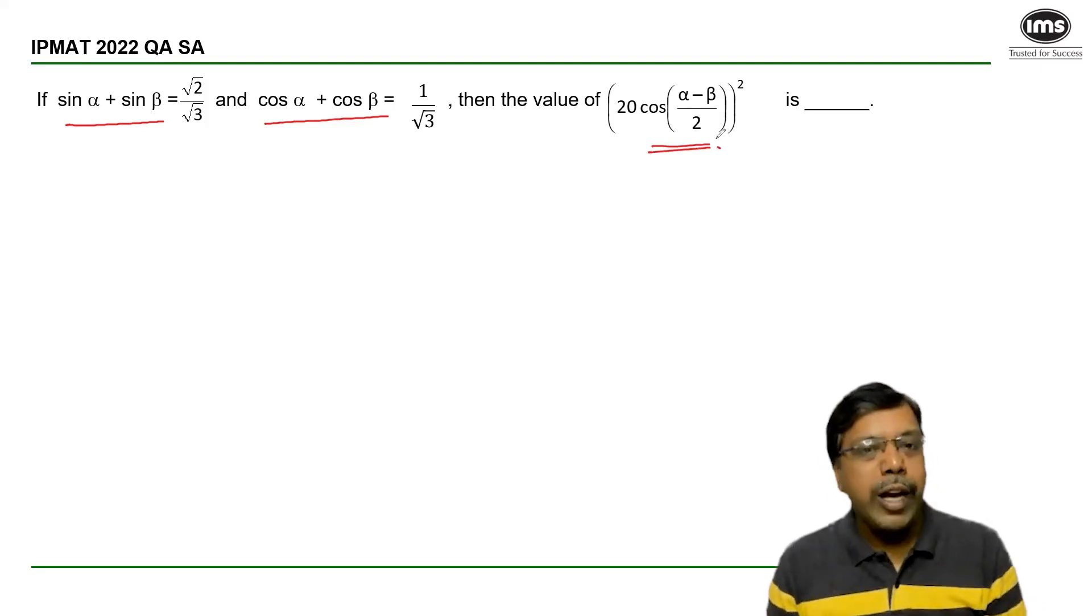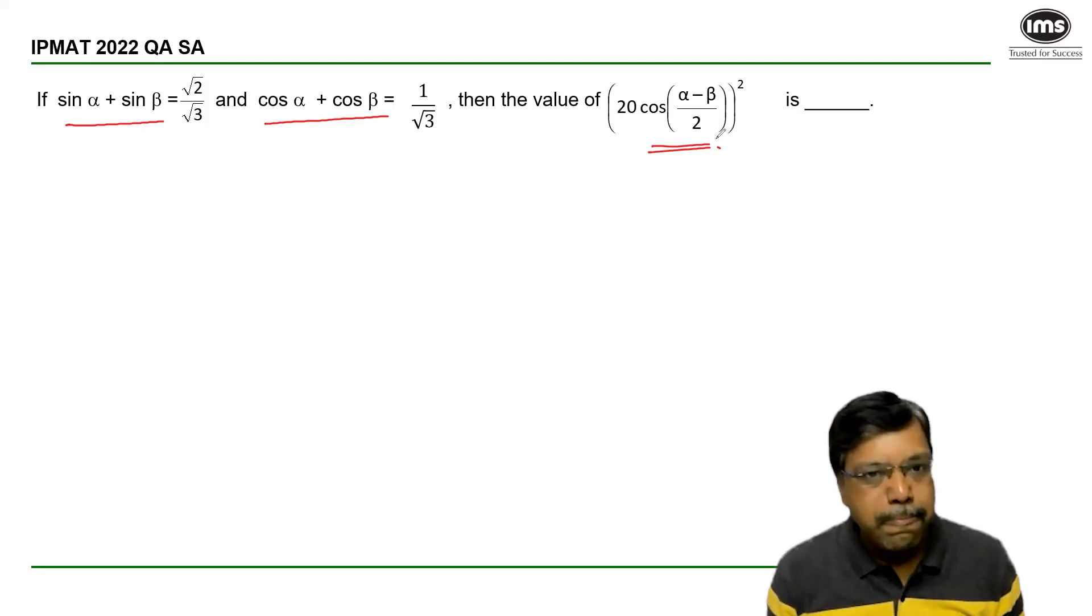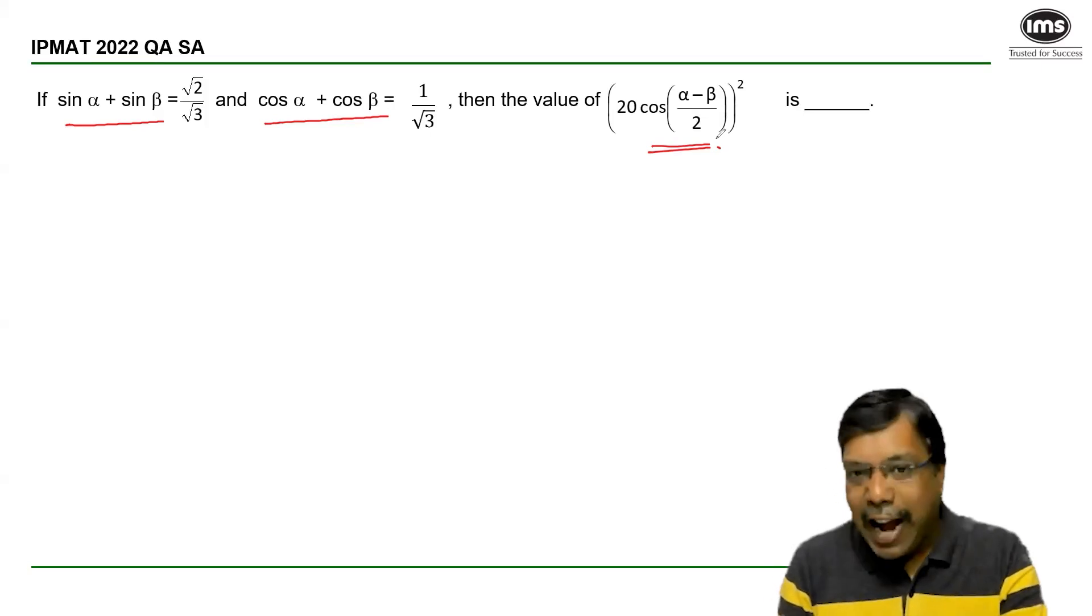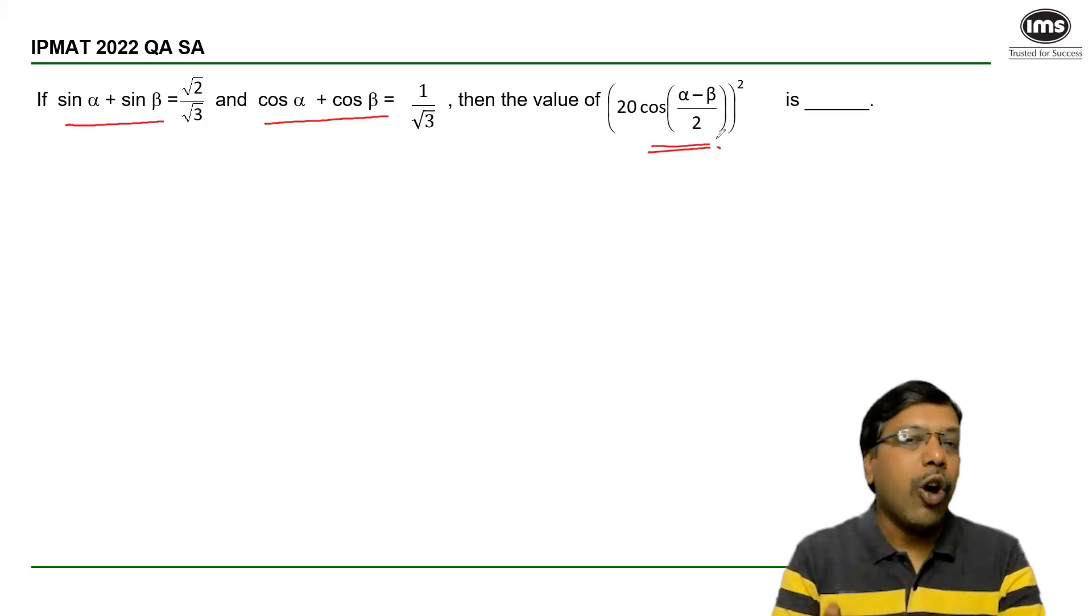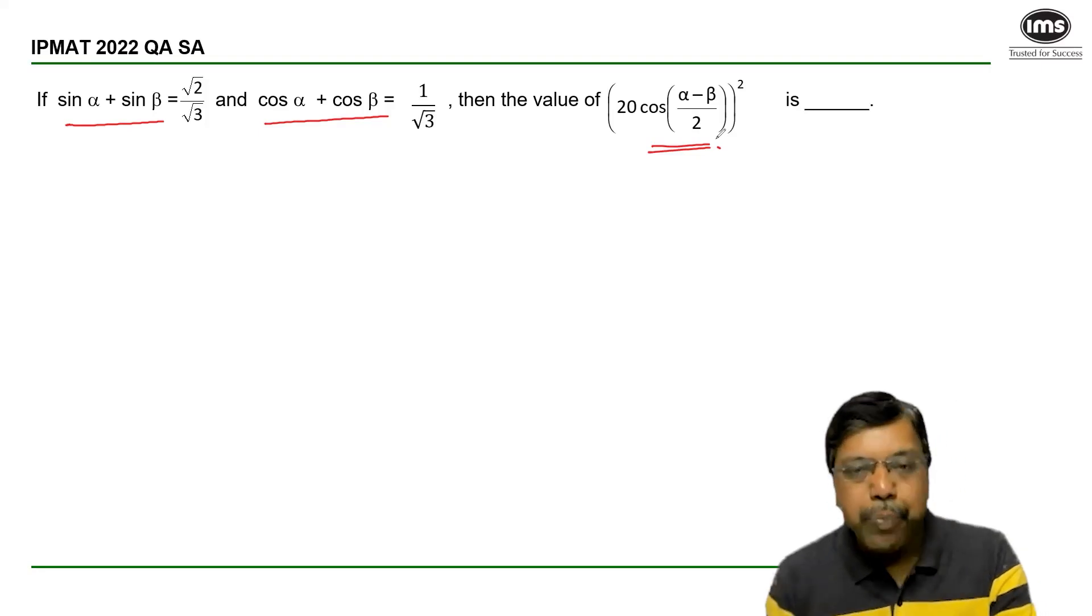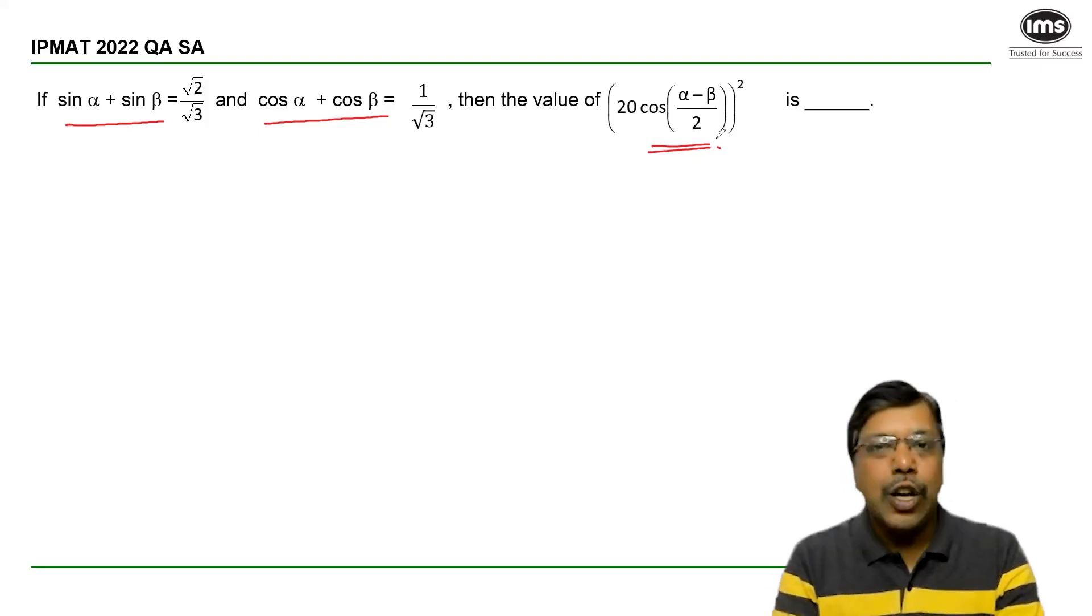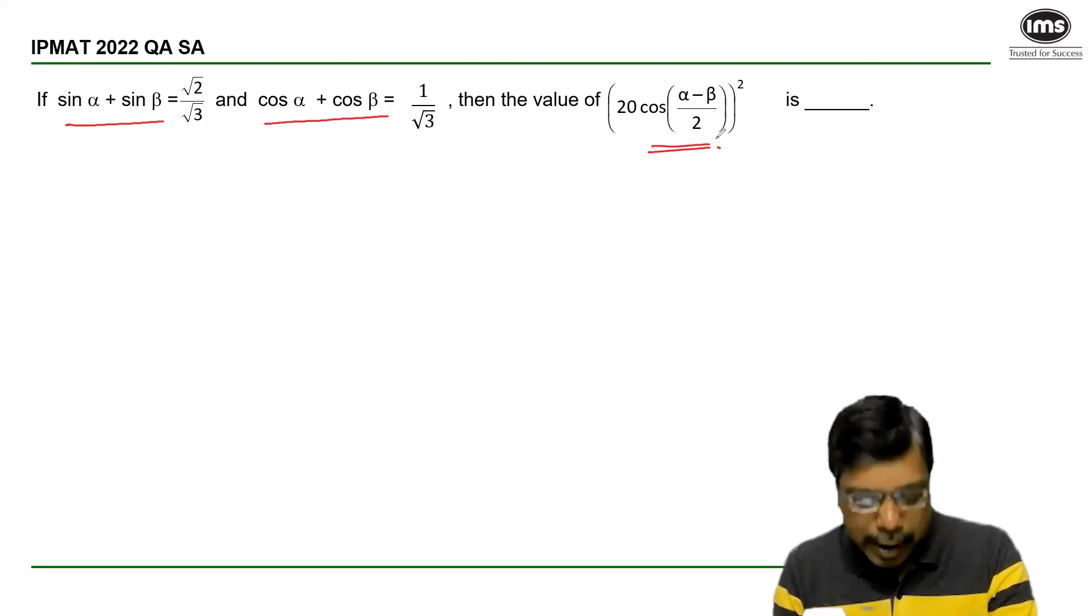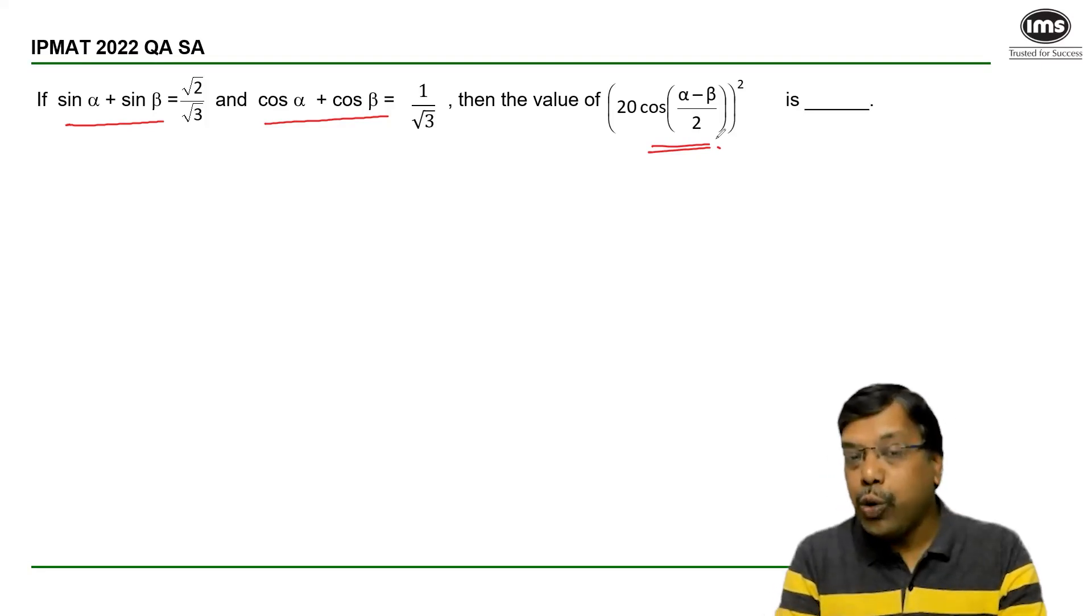The important point here is how we'll be able to connect these three. Now the fact that we know that cos alpha minus beta can be expressed as cos alpha cos beta plus sin alpha sin beta is a point to begin with. And in order to achieve that,